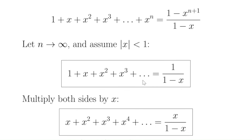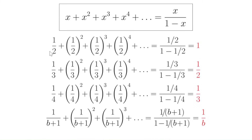If we multiply both sides of the geometric series equation by x, we get the form we need for our series. For example, letting x be one half gives: 1/2 plus 1/4 plus 1/8 plus 1/16 and so on, summing to 1. Or one third plus one ninth plus one over 27 and so on sums to one half — try that on a calculator and it gets closer and closer to 0.5. For our series, with x equal to 1 over b plus 1, plugging in gives a sum of 1 over b.